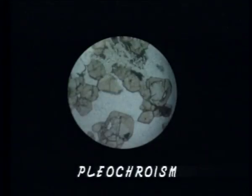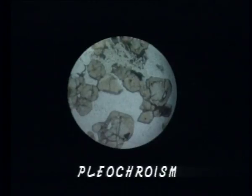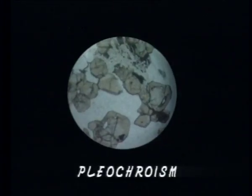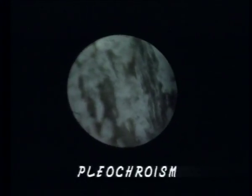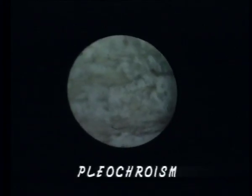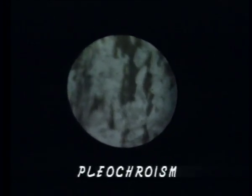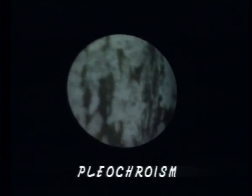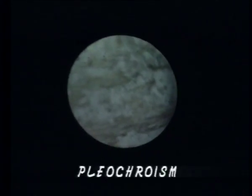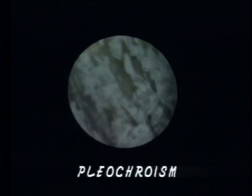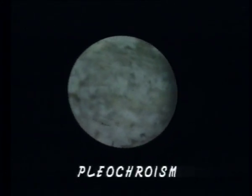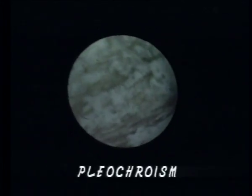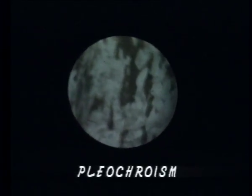There is a difference between colored isotropic and colored anisotropic minerals in terms of absorption characteristics. In isotropic minerals, color does not change on rotating the stage. But in anisotropic minerals, either the shade or the color itself is liable to change when the stage is rotated. This property is called pleochroism, and it results from changing the orientation of the mineral with reference to the polarizer vibration direction, because of which the refractive index and absorption characteristics of the mineral change.